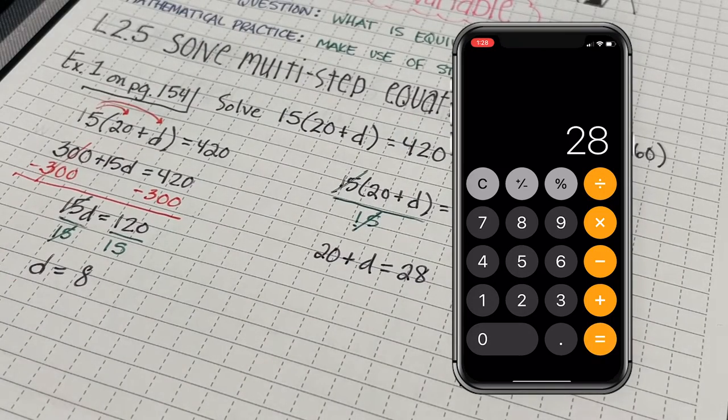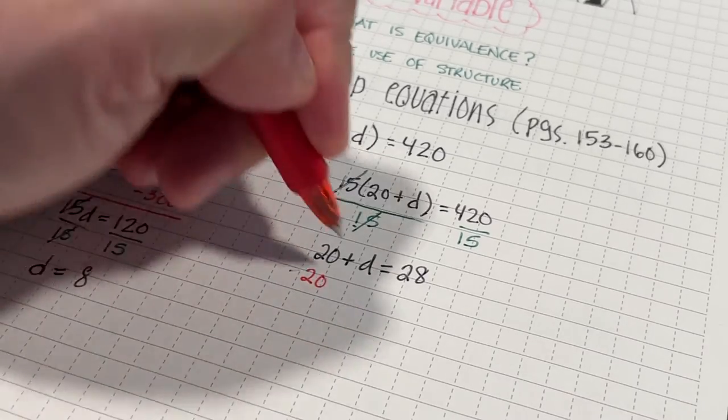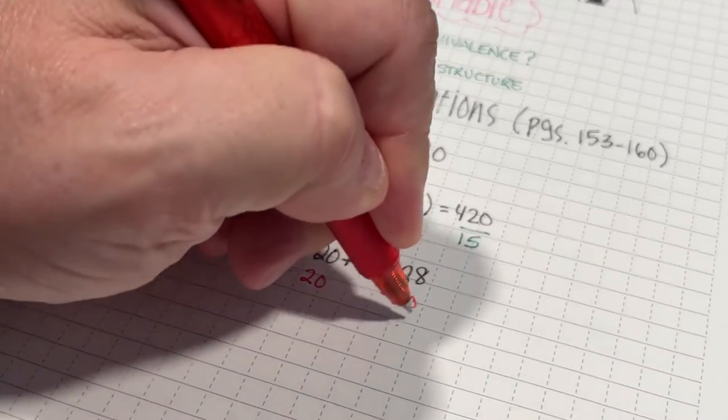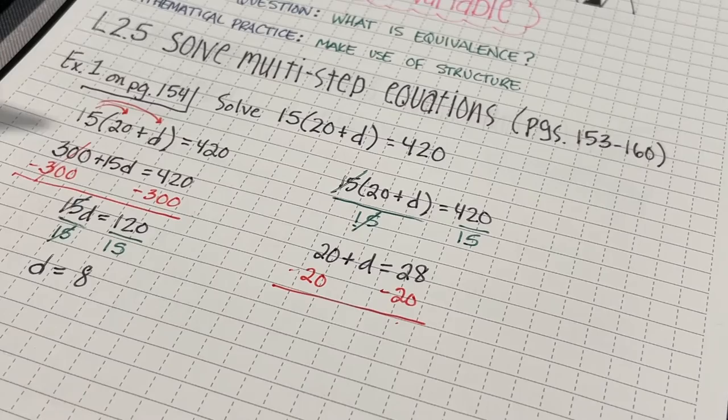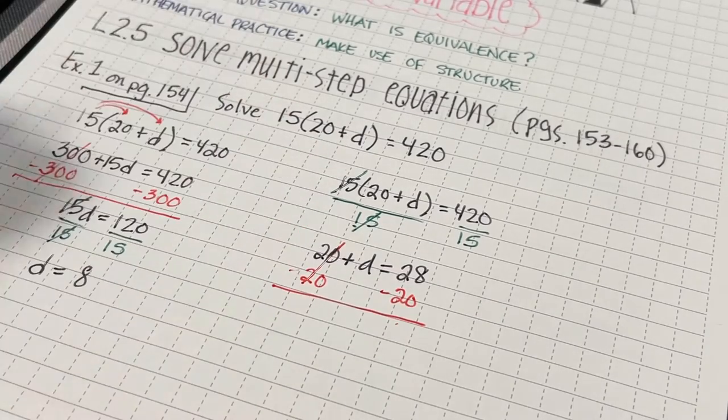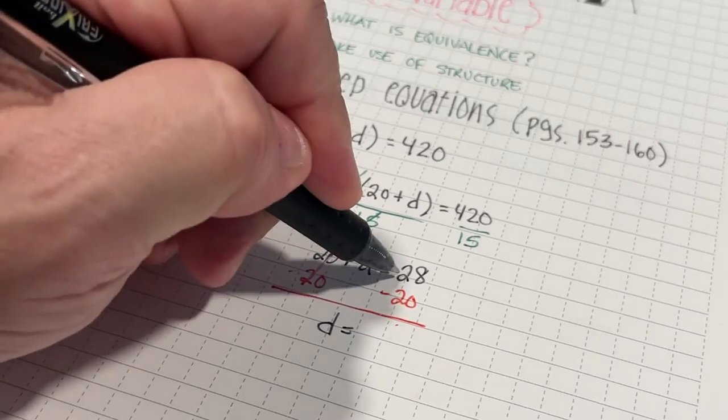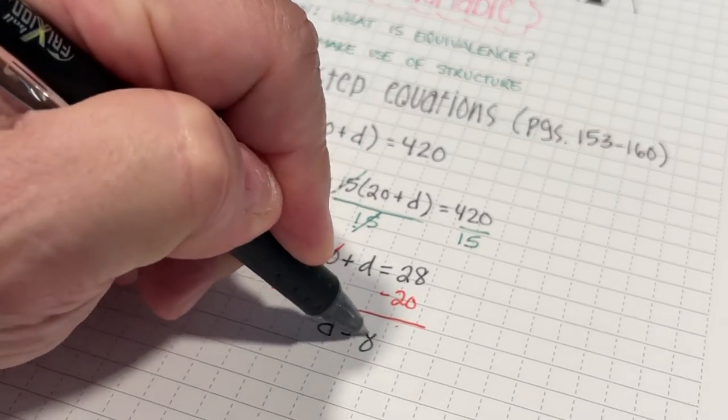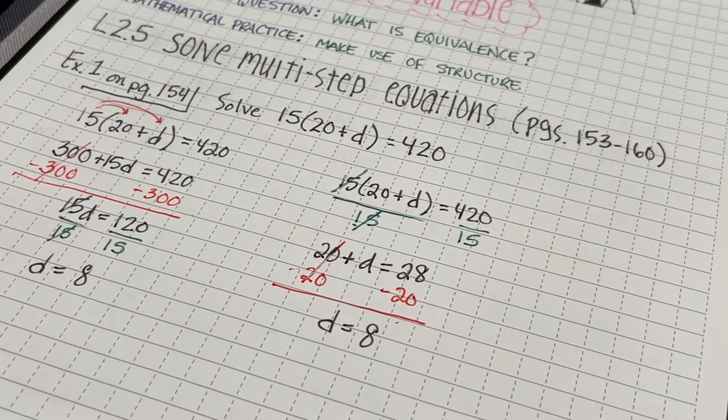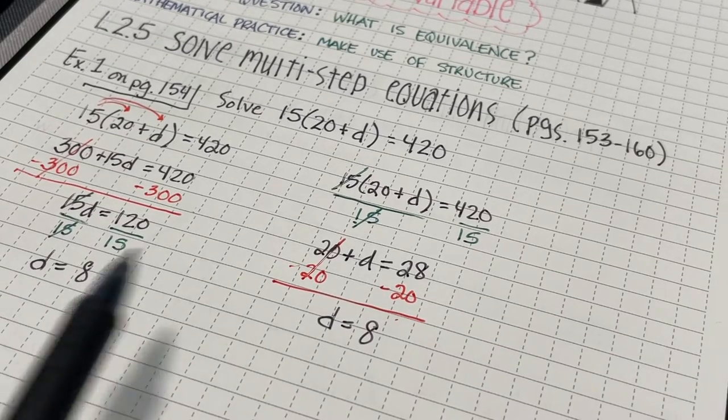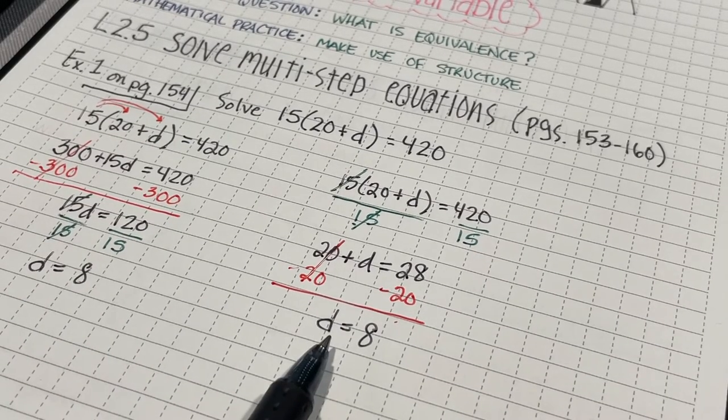Now, I'm going to subtract 20 from both sides. 20 minus 20 is 0, so I'll have D equals 28 minus 20, which is 8. Notice both strategies give me a solution of D equals 8.